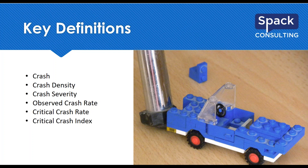Coming back to key definitions, our last term is the critical index — that is simply the observed crash rate divided by the critical crash rate. It's just the ratio of the two, and it's an easy way to look at a location and say, do we think we have an issue here? Again, just a ratio is what we're looking at there.